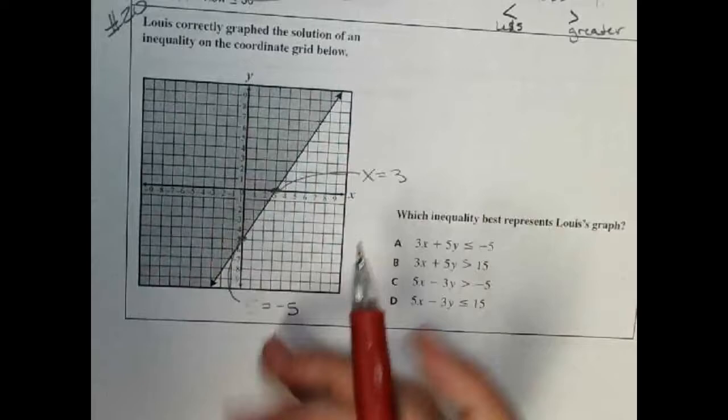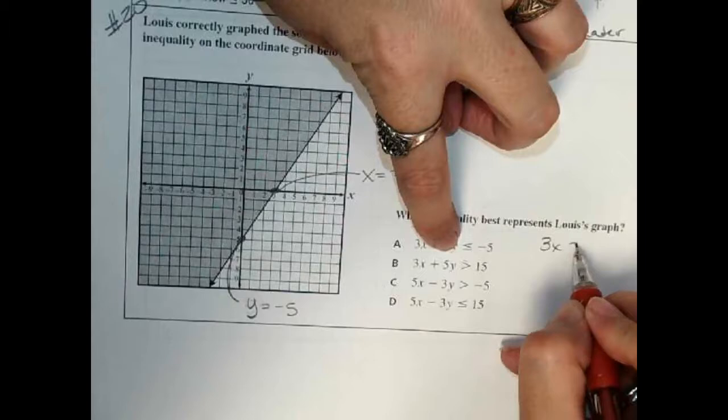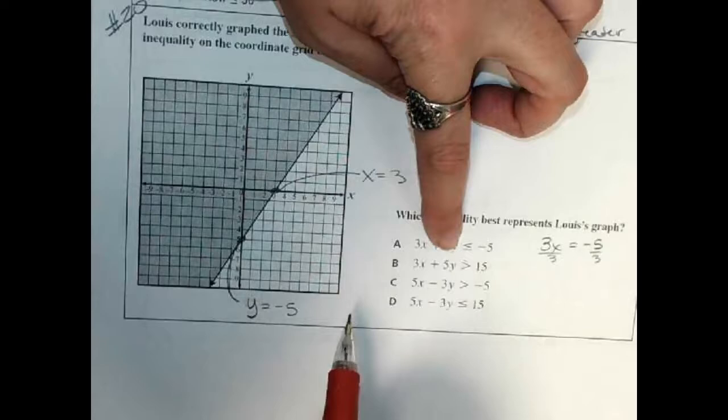So first we're going to test this one here. If I cover this up, this would give me 3x equals negative 5. If I divide by 3, do I get x equals 3? No, so this is not the right answer.